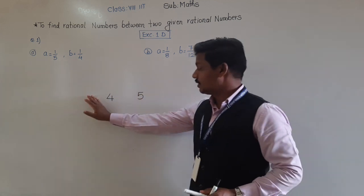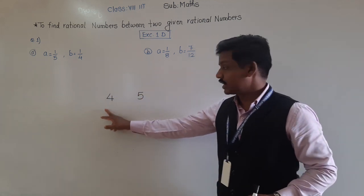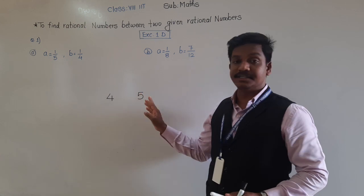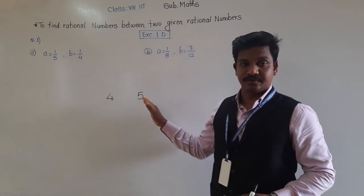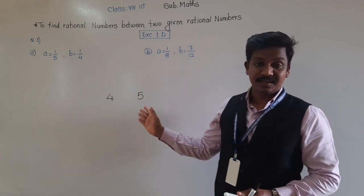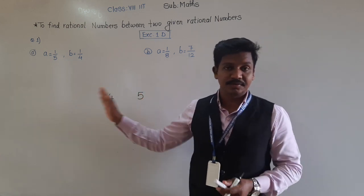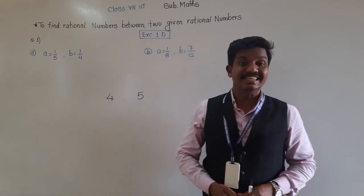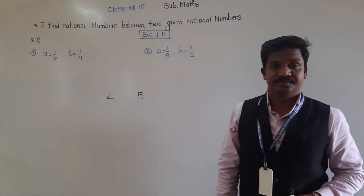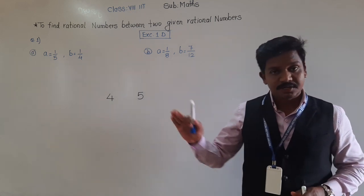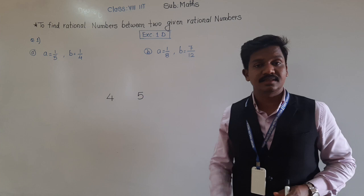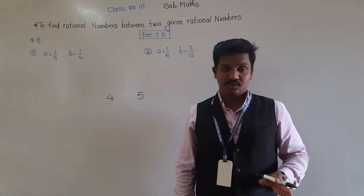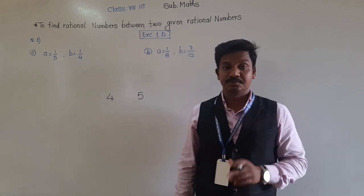See, here on this board I have written two numbers: four and five — two integers. So can you tell me, between four and five, is there any other integer? No, there is no integer between them.